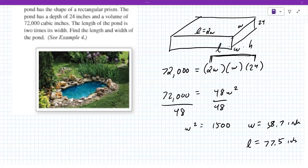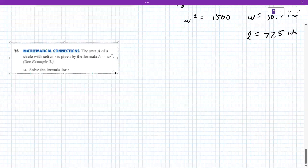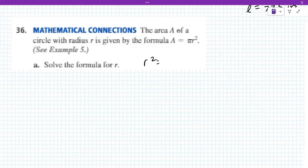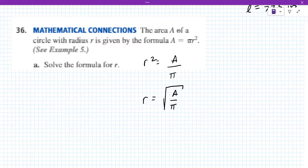Let me grab the next picture. Problem 36: the area of a circle with radius r is given by A equals pi r squared. They want you to solve this formula for r. Divide both sides by pi, so A over pi equals r squared, then r equals the square root of A over pi.